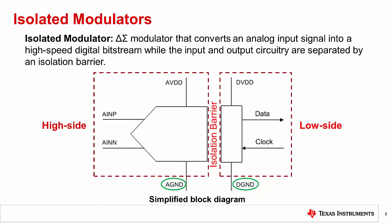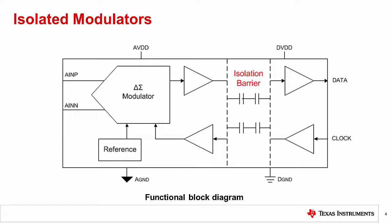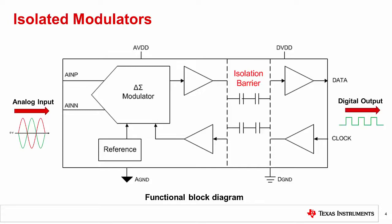So how is an isolated modulator different from a non-isolated modulator? Let's take a closer look at the functional block diagram of an isolated modulator. Isolated modulators take an analog signal on the input and produce a digital bitstream on the output. The input is fully differential and drives a delta sigma modulator that continuously oversamples the analog input signal. The delta sigma modulator uses a voltage reference and a clock to convert the analog input signal to a continuous one-bit output stream that is then transferred across the isolation barrier.